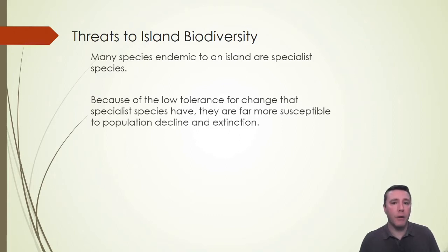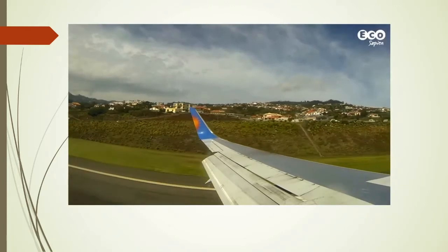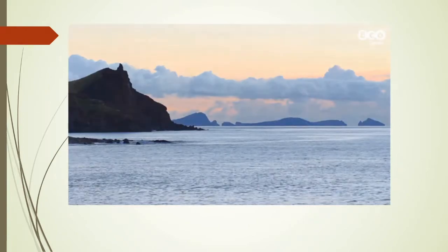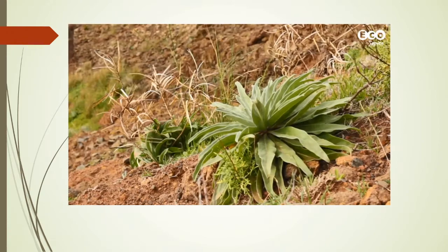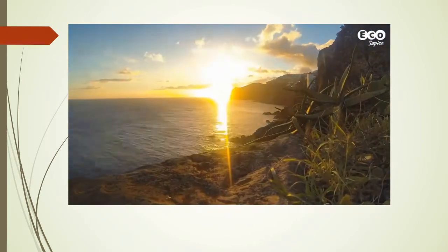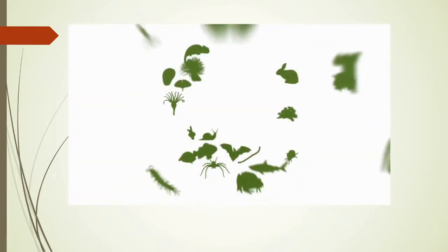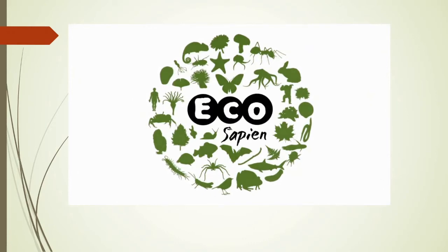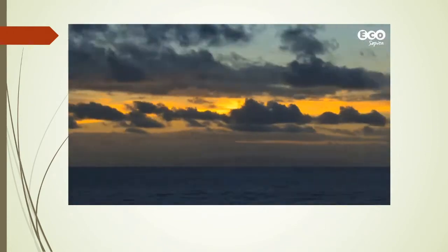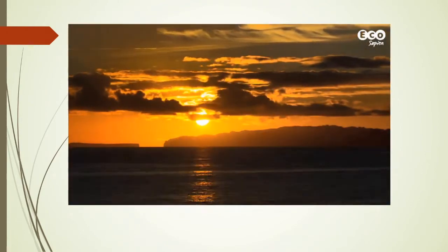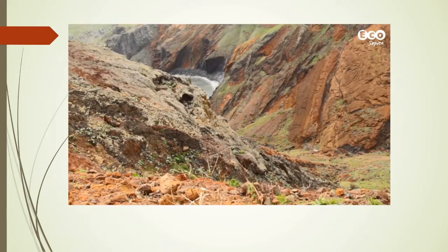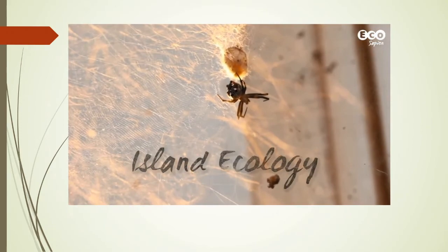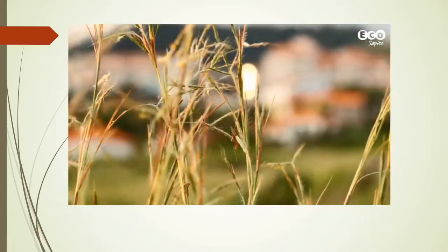To summarize our look at island biogeography, we're going to take a short look at a video by EcoSapien. After a four-hour flight, we landed on a small island 520 kilometers off the coast of Africa — climatically and geographically distinct, home to an astonishing floral diversity. This island is Madeira. We've established that Madeira is an island, and filming in such a place opens up a perfect opportunity to talk about island ecology and the potential conservation issues that islands face.